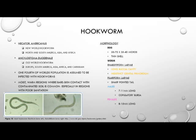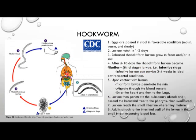The filariform larvae of both species has a sharp pointed tail, with males measuring 7 to 11 millimeters long with a copulatory bursa, and females measuring 8 to 15 millimeters long.